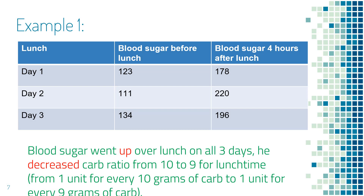In this first example, he wants to find out if the carb ratio for lunch time is correct. He checked blood sugar right before lunch, entered the sugar number and carb number into the pump, and took a bolus of insulin according to the pump's suggestion.